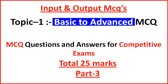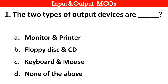Hi guys, aaj ki is video mein hum dekhenge input and output ki top MCQs. Question no. 1: The two types of output devices are dash. Right answer is option A: Monitors and printer.